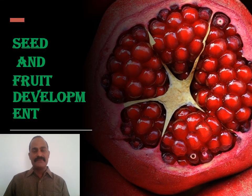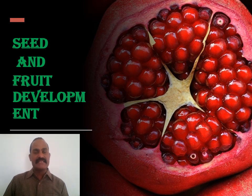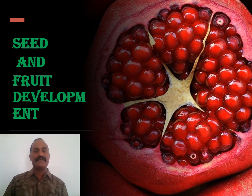Today we are going to discuss a very important topic in angiosperm, and that is seed and fruit development. As we know, after fertilization, the ovule contains the diploid zygote and triploid endosperm. The zygote gets developed into a multicellular structure called the embryo — the forerunner of the future plant — and the endosperm, which is a nutritive tissue. So we have to study the enclosures for these two important structures, in the form of seed and fruit.